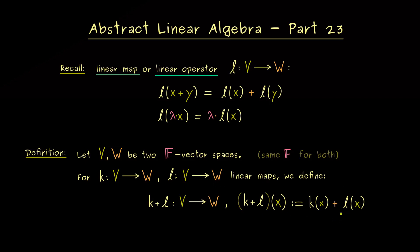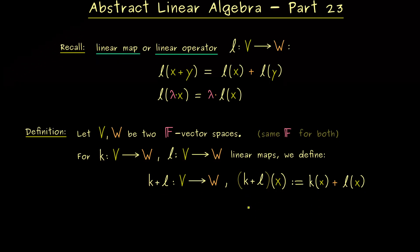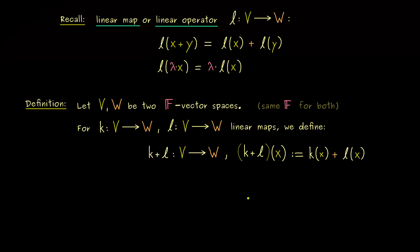So similarly to before, here we have the vector addition in W. However, please note the addition, the plus sign on the left-hand side here, is a new plus sign because it denotes the addition of two linear operators. So this is something that wasn't defined before, but now it's defined by this definition.